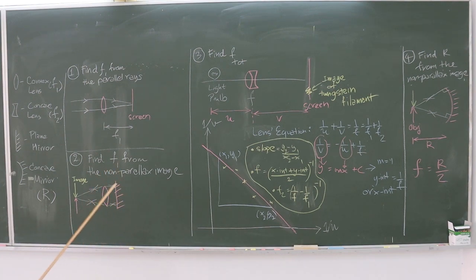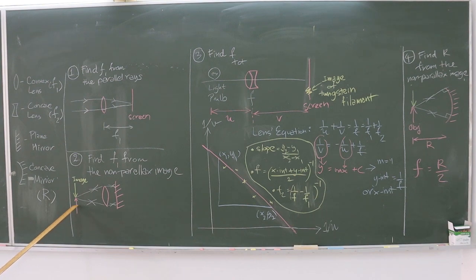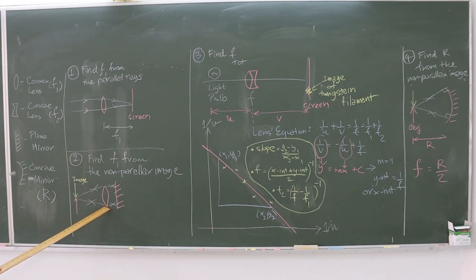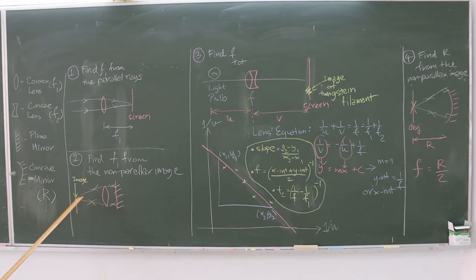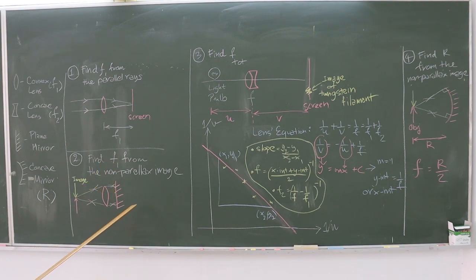The instruments used in this part consist of the convex lens, the plane mirror placed behind the lens, and a sharp point object placed in front of the lens. If we move the object to the focal point of the lens, the light from the object after passing through the lens will become parallel light. After perpendicularly reflecting from the plane mirror, the light will form the image at the same position as the object. Students will see the non-parallax image and find the focal length from the difference between the position of the lens and the sharp point object.